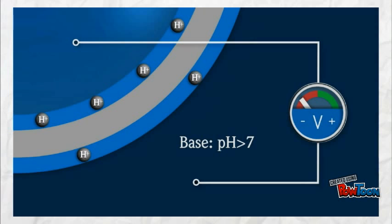If the concentration of the hydrogen ions is lower on the outside than the inside, pH is higher than 7. Hence, it is a basic solution.